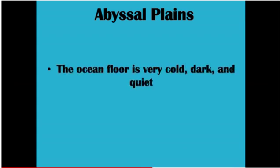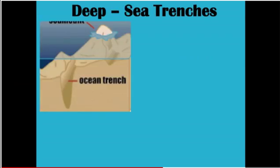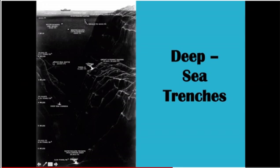Down on the abyssal plains and in the deep parts of the ocean, all the water is very cold, except for a couple of places we'll talk about in a minute. It's also very dark. Sunlight can penetrate through the shallow water of the continental shelf, but it doesn't reach very far into the deep water, and it's very quiet along the bottom of the ocean. The deep parts of the ocean are very cold, dark, and quiet.